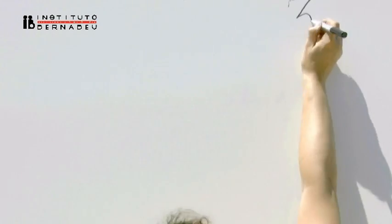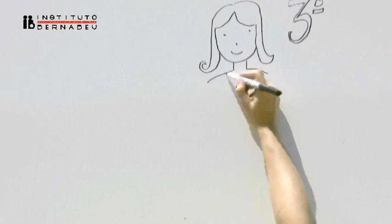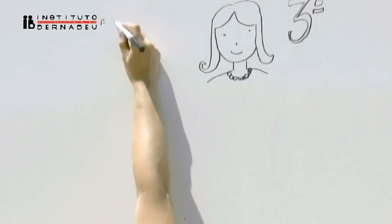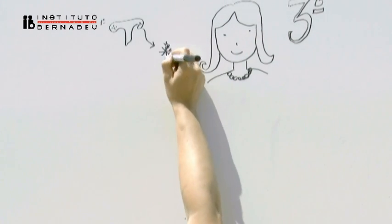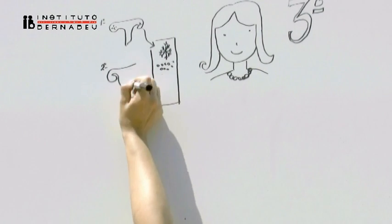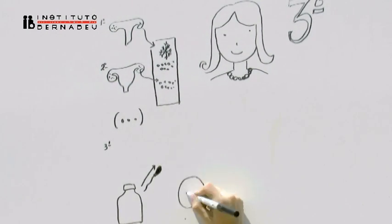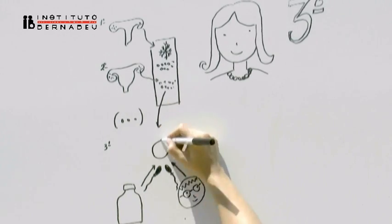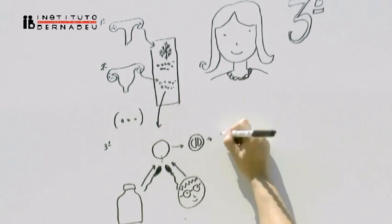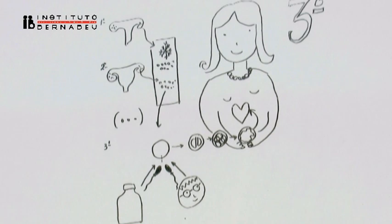If you do not have a partner and would like to postpone maternity, it would be possible to perform one or more fertility treatments to attain your eggs and then freeze them. This is egg vitrification — you wait for the right time for fertilization with conjugal sperm or donor sperm, and subsequently the embryos are transferred to achieve pregnancy.